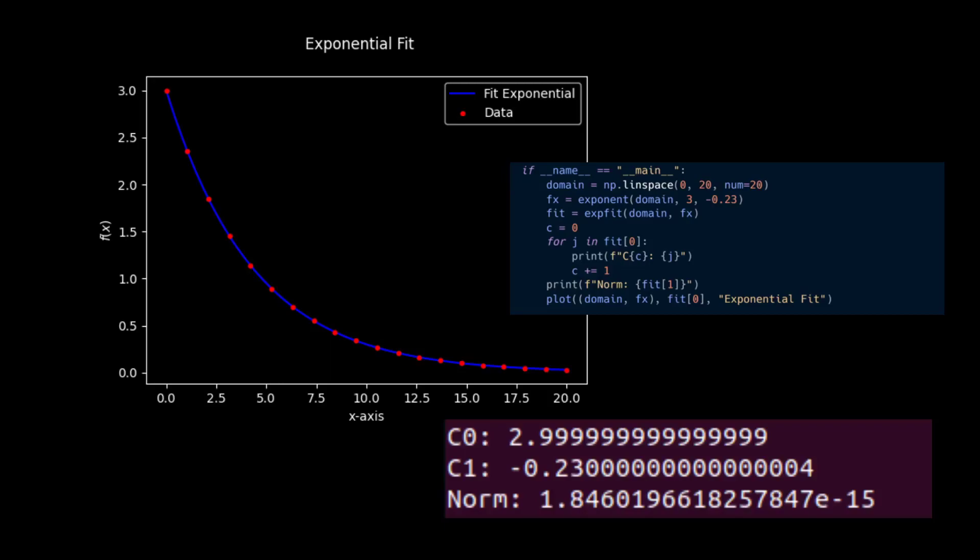The c1 coefficient corresponds to our alpha coefficient which is -0.23 with a bunch of zeros and a 4. Again we can pretty much consider that to be floating point arithmetic error, so we can go ahead and do some rounding.